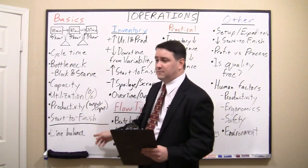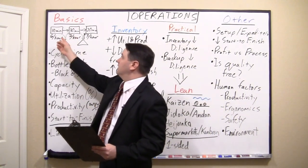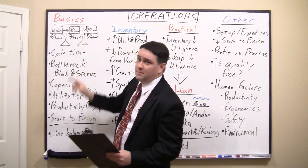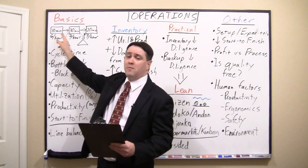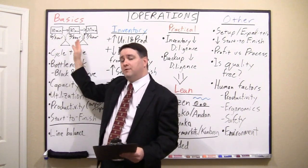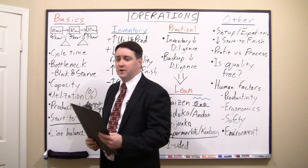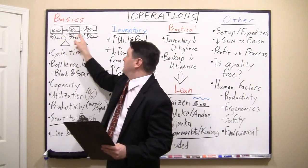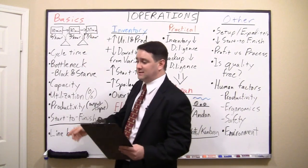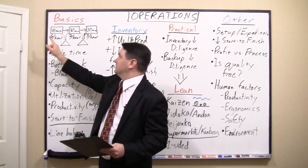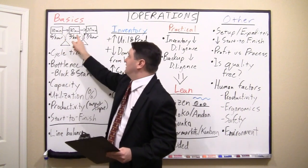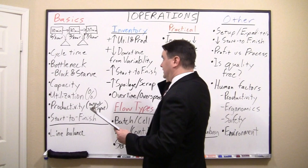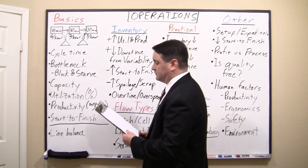The first thing I want to talk about is some of the basics — just go over some definitions. I've created here a process where there are three operations to perform. It's important to remember this can be production, and I'm going to talk about this like manufacturing, but it can also be something like a service where the customer actually flows through these processes. If you're at the Department of Motor Vehicles, you have to take a paper test, get your vision checked, and then take a driver's test to get your license.